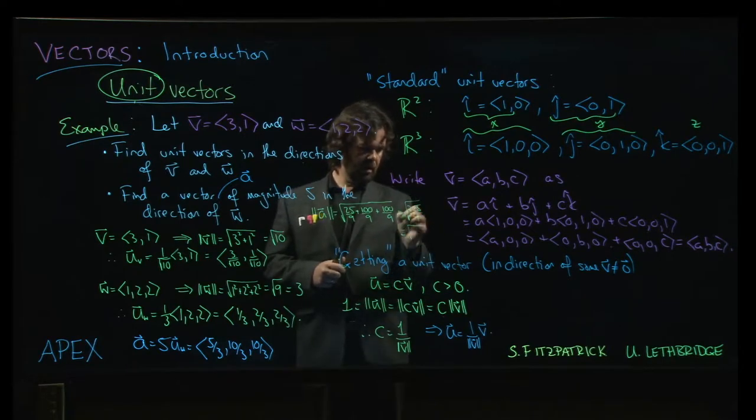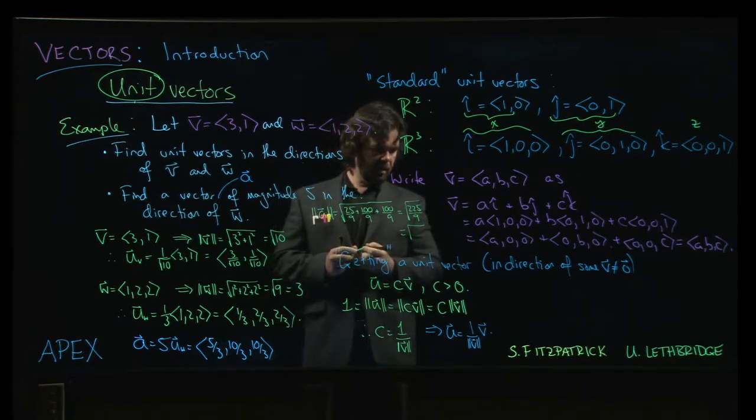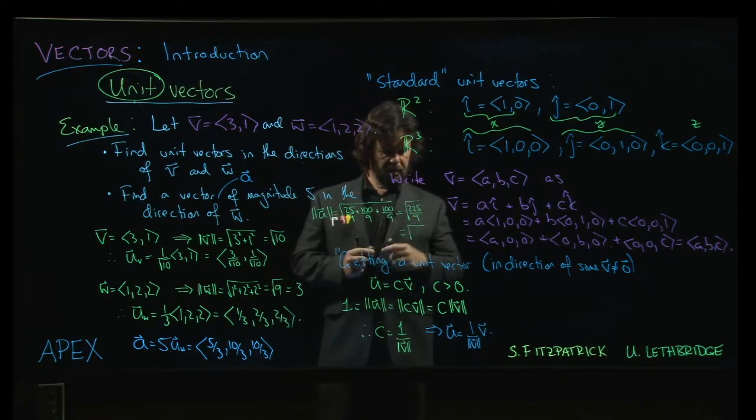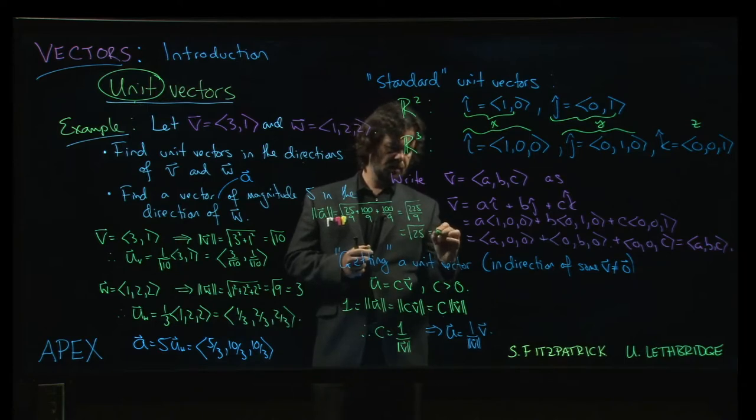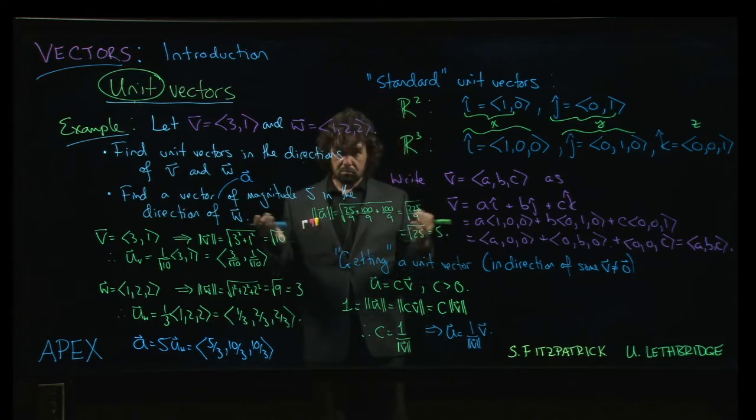Let's see, 9 goes into 225, let's see, twice, bring down the 4, square root of 25, of course, right? We get that magnitude of 5 that we were expecting. So, it works out.